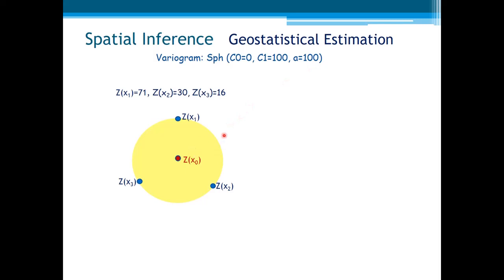The yellow circle here indicates the variogram range values regarding the distance of the samples to the point to be estimated. It means that all samples are at the same distance to the point, and this distance is precisely equal to the range of the variogram.